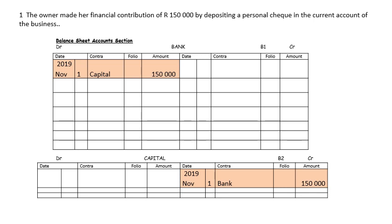You should know by now that any transaction must be recorded into two accounts. If the business receives money, bank being an asset will increase. That is why you have bank on the debit side. Asset increases on the debit side, decreases on the credit side. Inside bank, you should have the 1st of November — the money was received for capital. Remember, whatever is written inside the account is the name of the other account concerned, and the amount is $150,000. Capital is an owner's account.